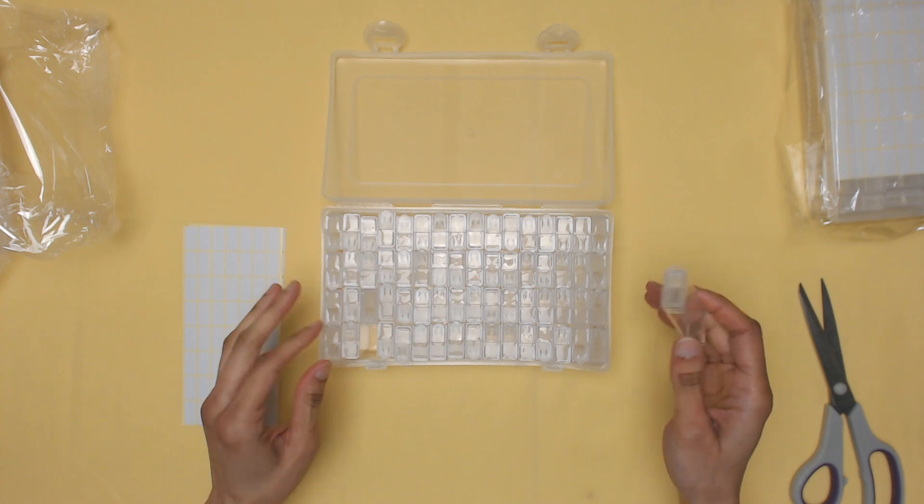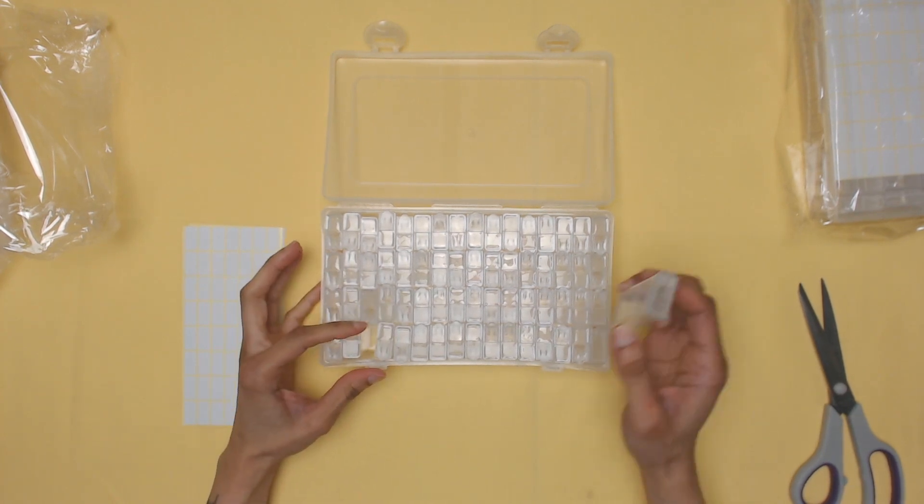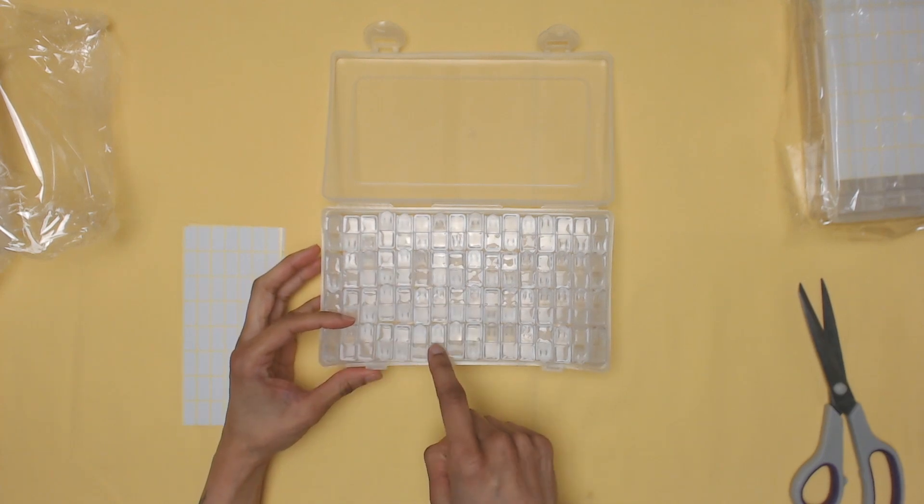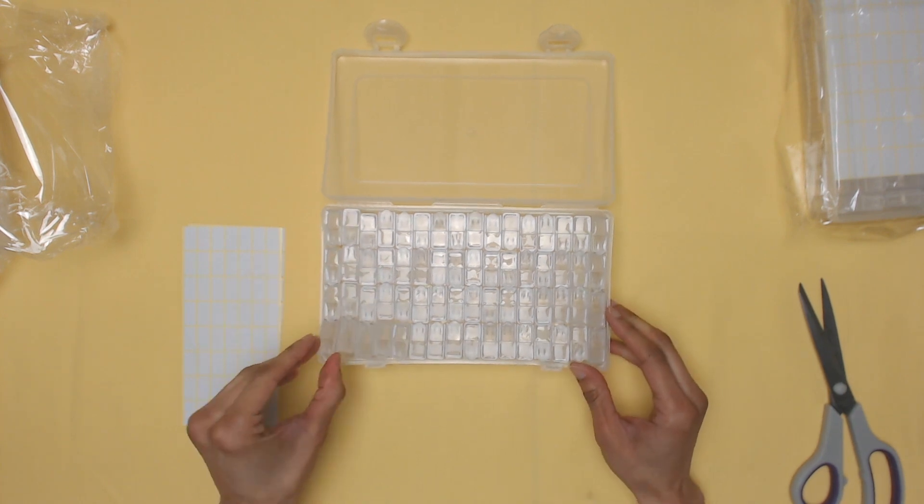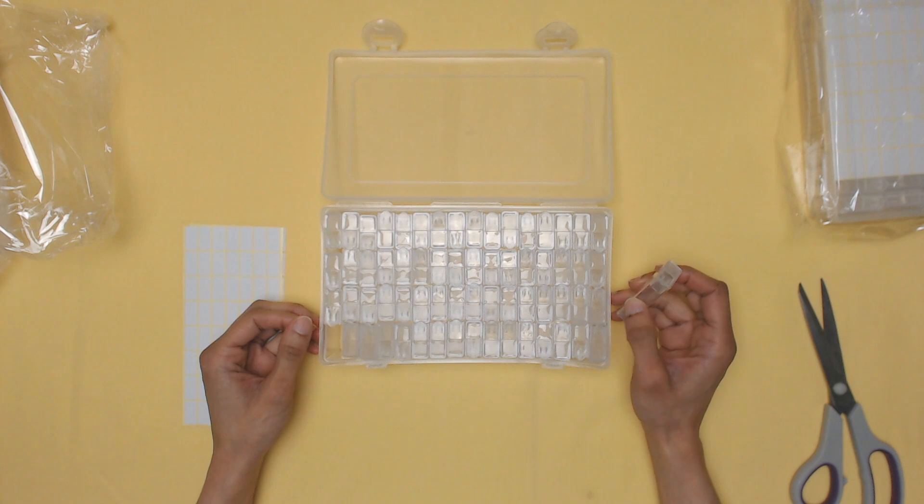So let's take one out. This is the, I think this is the 64 in one. Three, four, five, six, seven, eight, nine, 10, 11, 12, 13, 14, 15, 16. Sixteen times four is 64. Okay.